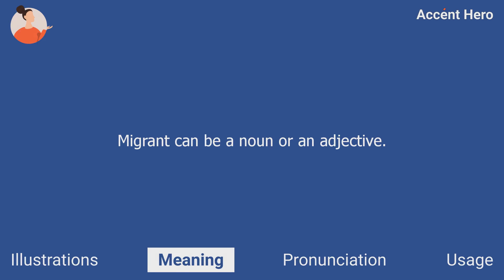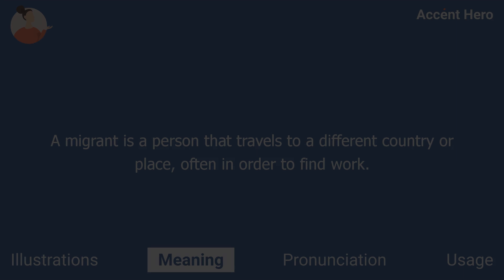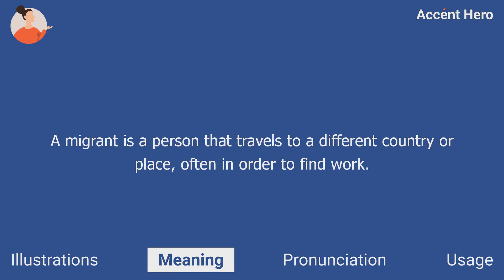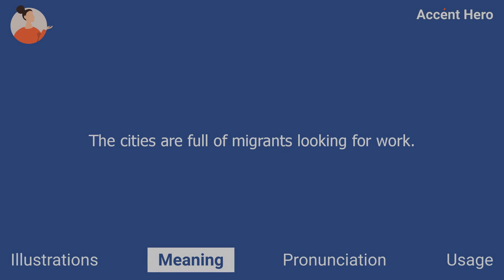Migrant can be a noun or an adjective. A migrant is a person that travels to a different country or place, often in order to find work. For example, you can say: the cities are full of migrants looking for work.